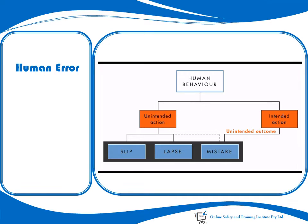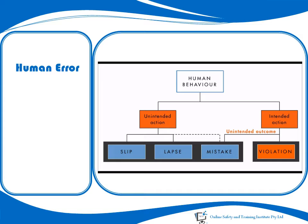All these errors are unintentional — we didn't mean to do what we did. In the case of slips and lapses, we didn't intend to make a mess of things; in the case of a mistake, we didn't intend to solve the problem badly. But there is one other sort that is quite different from the rest — we call this a violation, when someone does what they know they shouldn't.